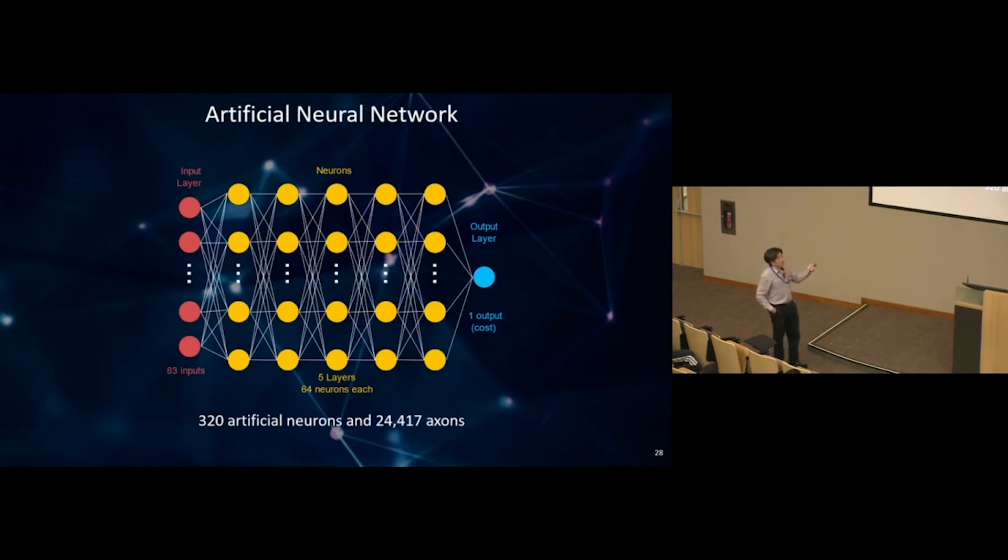This is why we construct this neural network. It has 63 input parameters going to 64 neurons, and we connect every single neuron up. This is different with biological neural networks. In artificial neural networks, you can have an output that goes 64 different ways. In the end, we have 320 artificial neurons with about 24,000 axons, connections between neurons. After this, you have an output layer giving one output telling you the cost of your experiment.